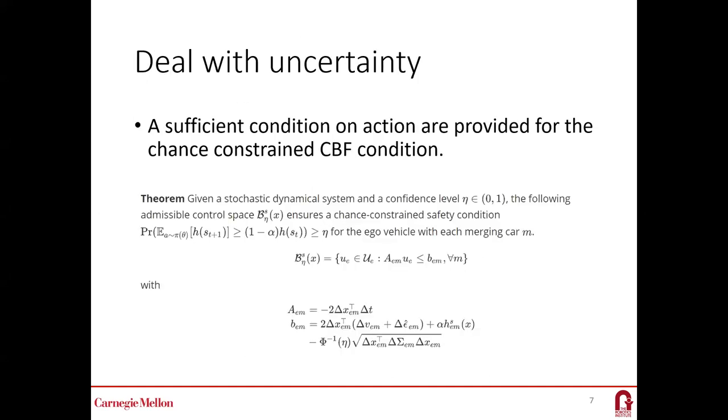Here's the theorem. This theorem was derived from the probabilistic CBF constraints and provided an admissible set for the probabilistic CBF constraints. Note that eta here is the confidence level of the constraint. By adjusting this parameter, we can adjust the confidence level. If we want the constraint to be satisfied with a probability of 95%, then we can select it as 0.95.